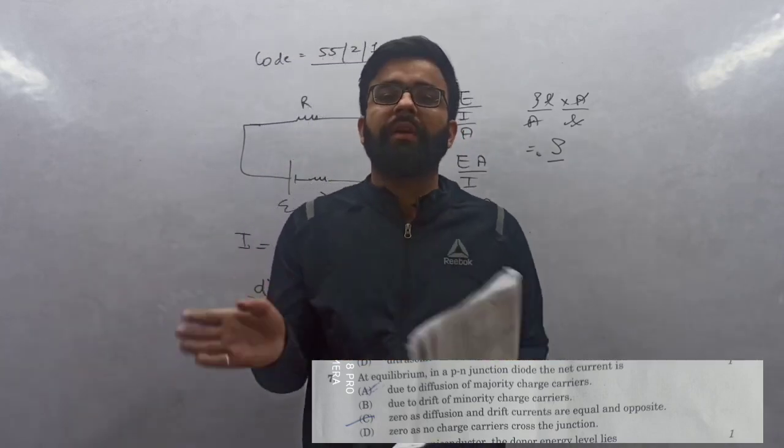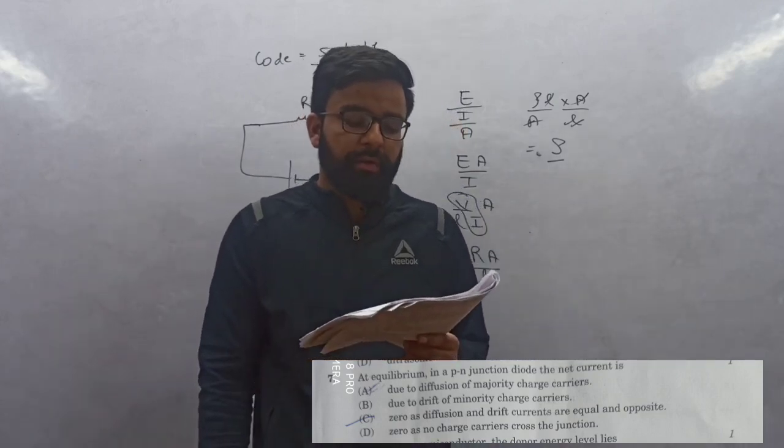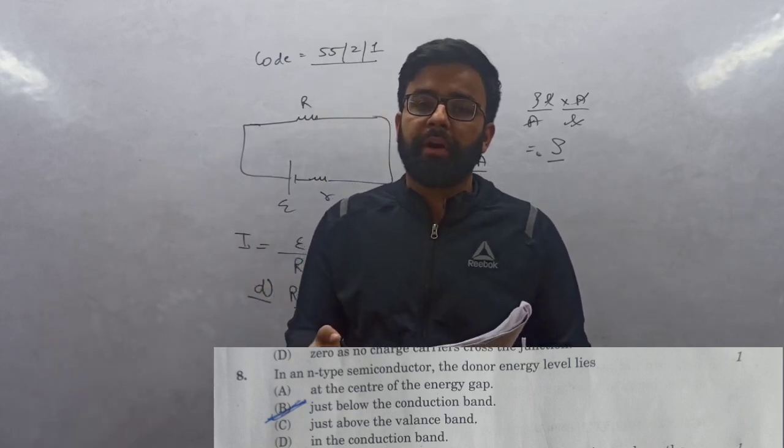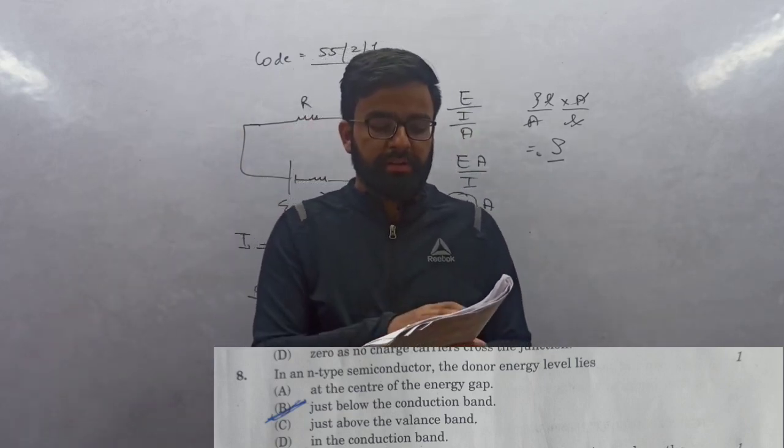Question 8: N-type semiconductor means donor type impurity. Donor energy level lies just below the conduction band. So answer is B, just below the conduction band.